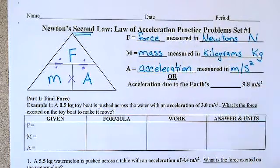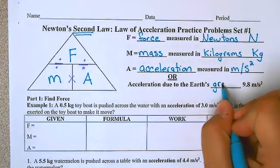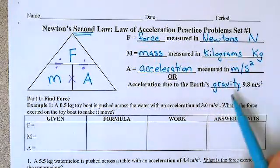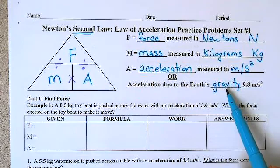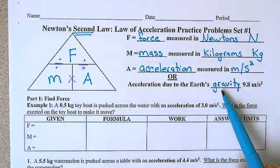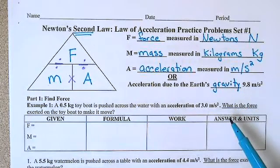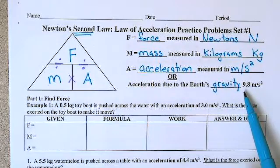And then another thing we need to know for Newton's second law is Earth's gravity. Gravity is a type of acceleration. If you're falling out of a plane, you start at zero meters per second and as you fall you get faster and faster. Every second that you fall, you pick up your speed by 9.8 meters per second.